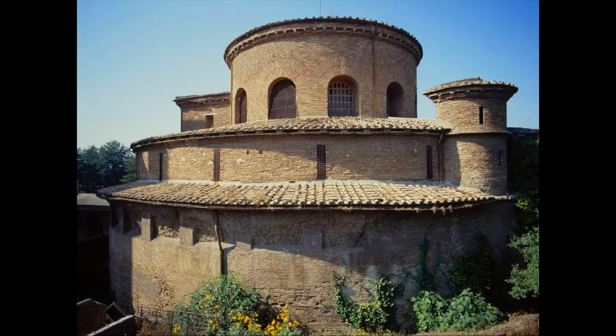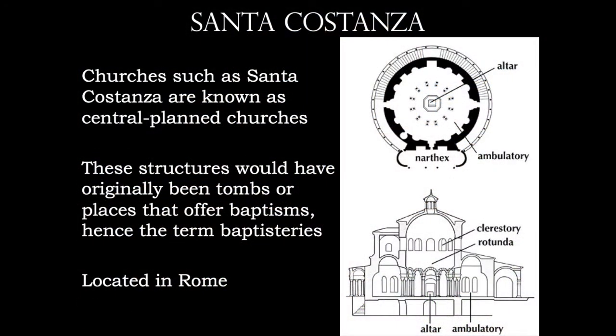Our first artwork is going to be architecture: the Church of Santa Costanza. The first thing you should note is that it is round — not at all like the common churches we'll see during the Middle Ages and the Renaissance. This is what's called a centrally planned church, very radial in terms of balance, with everything emanating from a central point. These structures were originally tombs or places that offered baptisms, normally called baptisteries.